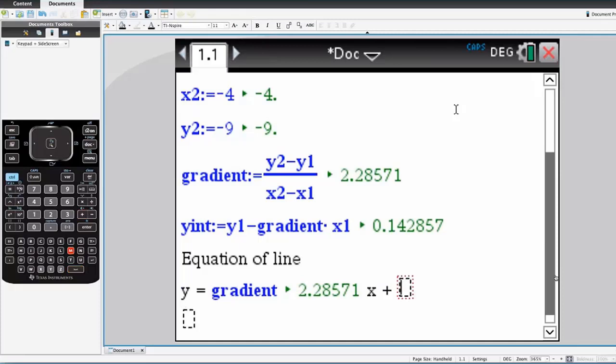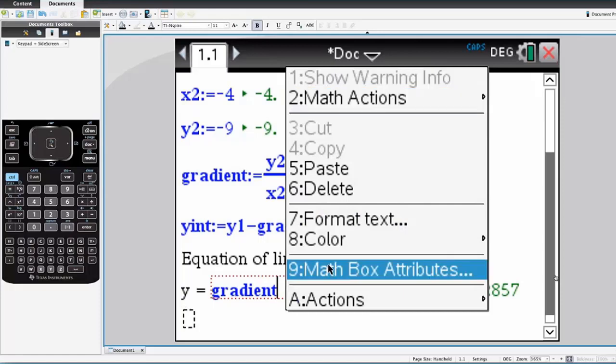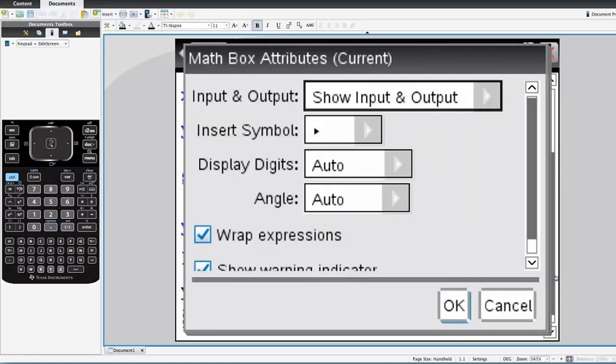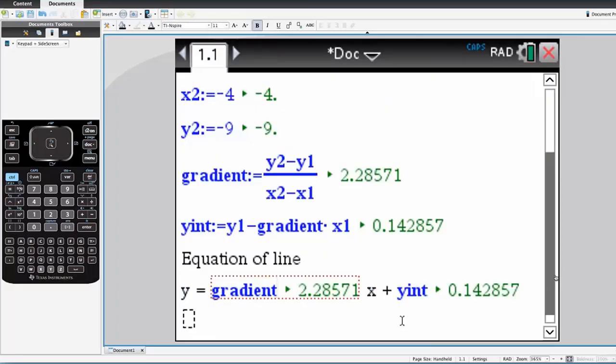And of course you could put it in the other form where you had the y-intercept first. It could be prettier than that. So probably the best thing to do is to change so that it doesn't show the word gradient. And that just means getting it to hide the input. So we'll hide the input for that. And you click away from it and you see that it's no longer there.